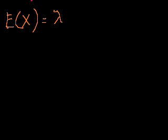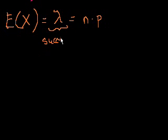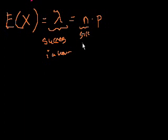We wanted to model it as a binomial distribution. If this is a binomial distribution, then lambda would be equal to the number of trials times the probability of success per trial. If we view a trial as an interval of time, this is the total number of successes in an hour, and this would be the probability of success in a smaller interval.